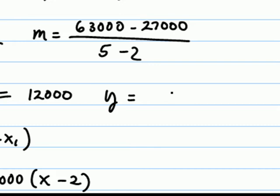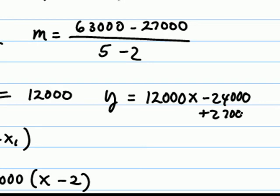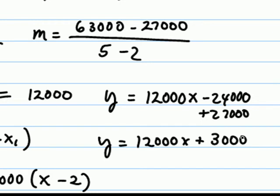To write it in slope intercept form, I'll distribute the 12,000 and then add the 27,000 to both sides. Giving the equation y equals 12,000x plus 3,000.